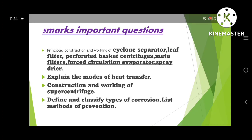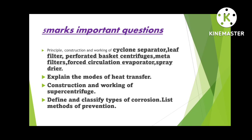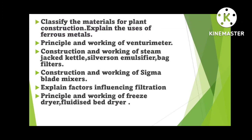Five-mark important questions: cyclone separator, leaf filter, perforated basket centrifuge, meta filter, forced circulation evaporator, spray dryer — same procedure: principle, construction, working, advantages, disadvantages for all. Also: explain the modes of heat transfer, construction and working of super centrifuge, define and classify types of corrosion with prevention methods, classify metals for plant construction and uses of ferrous metals, principle and working of a venturi meter, construction and working of a steam jacket kettle, sigma blade mixer, factors influencing filtration, and principle and working of freeze dryer and fluidized bed dryer.